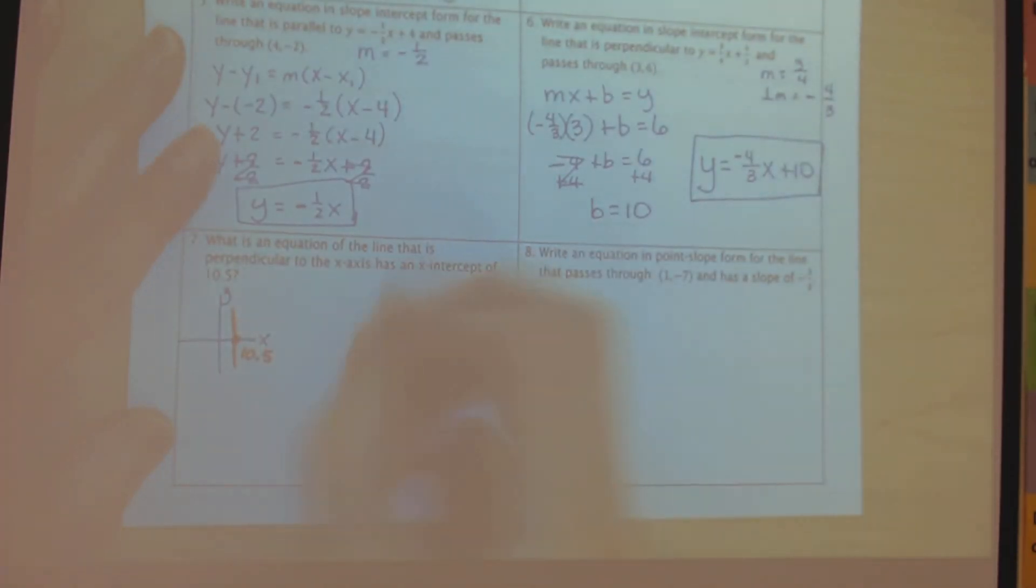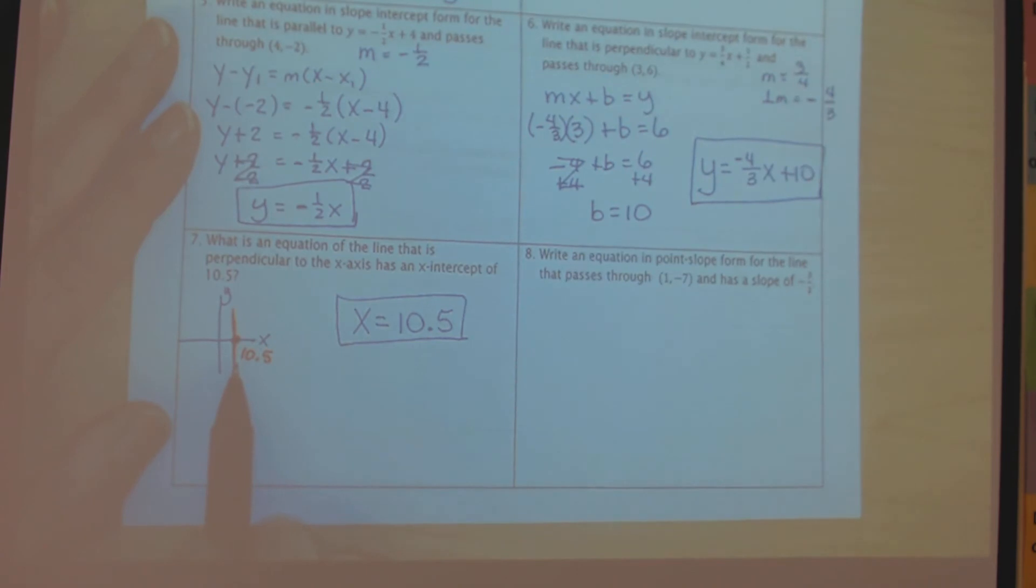So this is a vertical line, because it's a vertical line, that means my equation is going to be x equals, and it's going to equal 10.5, because that's where the line crosses the x-axis. So I made sure what kind of a line I had, whether it was horizontal or vertical, even though this said perpendicular, we've got to figure out whether it's perpendicular to the x or y. They told us perpendicular to the x-axis, so that makes it a vertical line, so its equation will be x equals whatever number they give us for x.